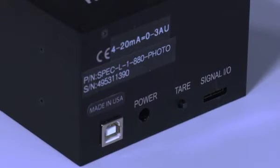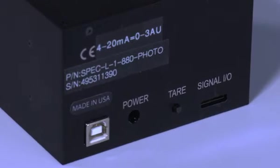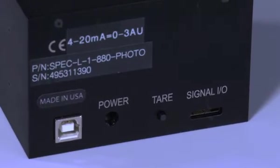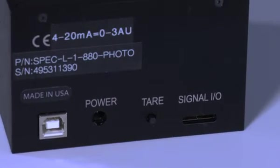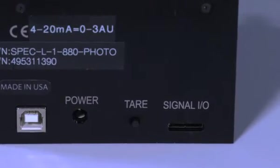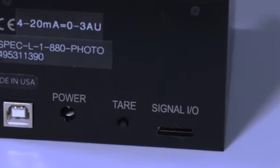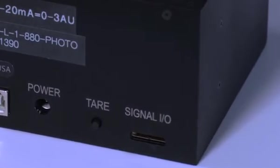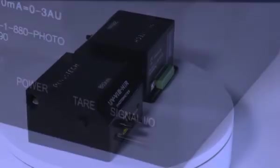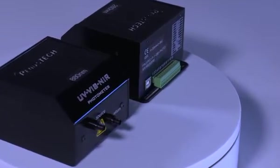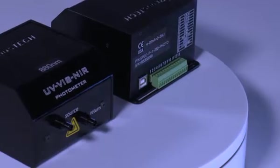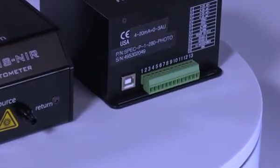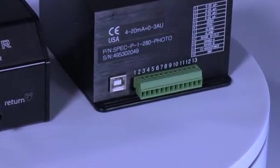The 4 to 20 milliamp analog output spans 0 to 3 absorption units. The photometer has a tare input that sets the baseline absorption as determined by the user to 0 absorption units. This would also correspond to a 4 milliamp signal on the transmitter output. For remote mounting inside an industrial cabinet, all electrical signals reside on a screw terminal connecting the power, output signal and the tare input.